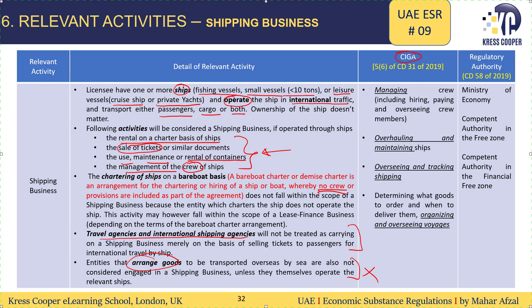These are the core income generating activities. If these are being performed in the UAE, then we will say that the CIGA test is being met. These activities are: managing crew in UAE, overhauling or maintaining ships in UAE, overseeing and tracking ships in UAE, and organizing and overseeing wages in UAE.